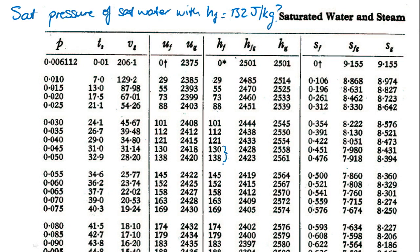We can see that 132 joules per kilogram sits between 130 and 138, so our saturation pressure will be between those two values. The saturation pressure of water with an enthalpy of 130 joules per kilogram is 0.045 bar, and the saturation pressure of saturated water with 138 joules per kilogram enthalpy is 0.050 bar.